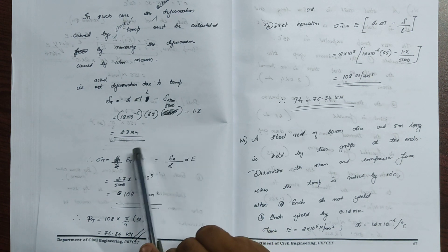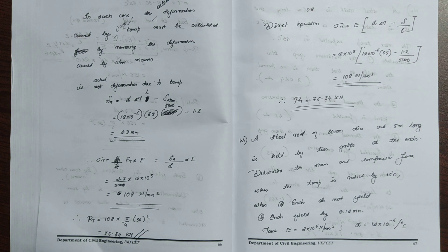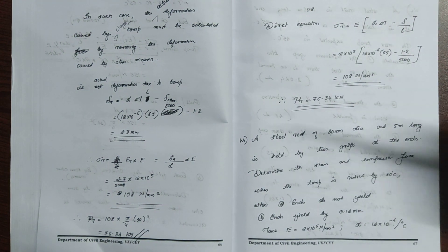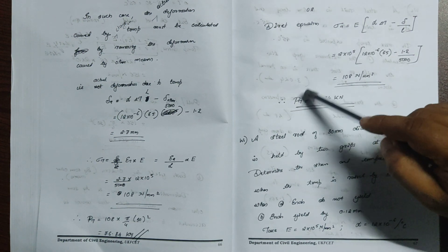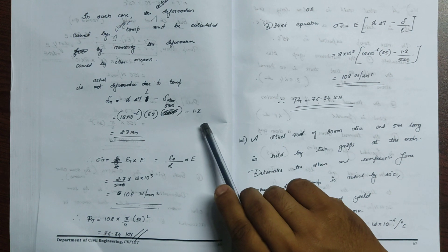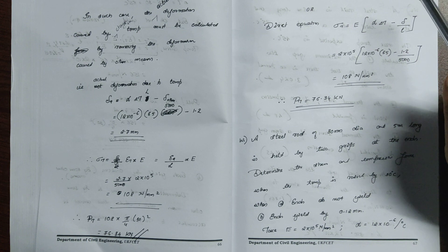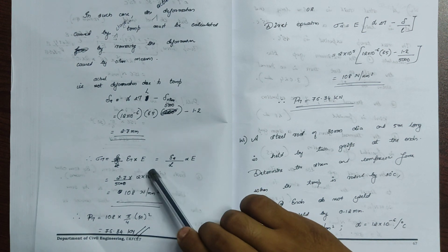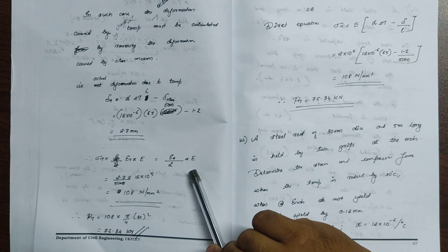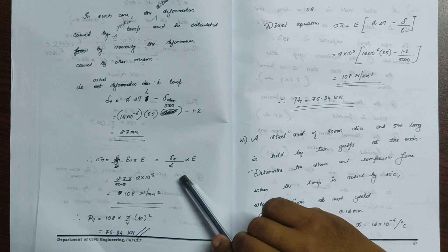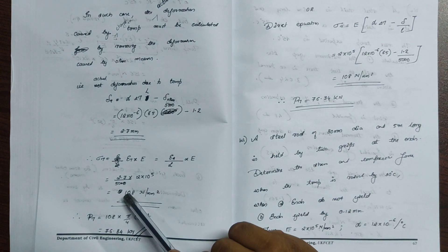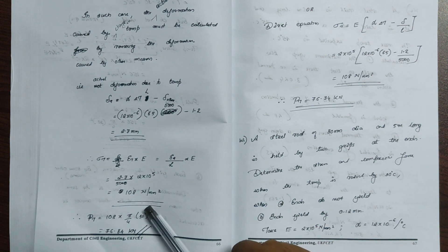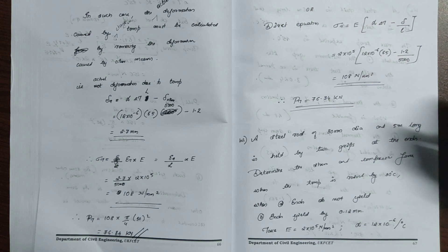The value because of the reaction is 5000 minus 1.2, giving a deformation of about 2.7 mm. The total deformation is about 3.9 mm, of which 1.2 mm is the yield and 2.7 mm is the actual. Strain equals change in length divided by original length: 2.7 mm divided by 5000 mm, multiplied by E equal to 2 into 10 power 5, giving stress equal to 108 N/mm².